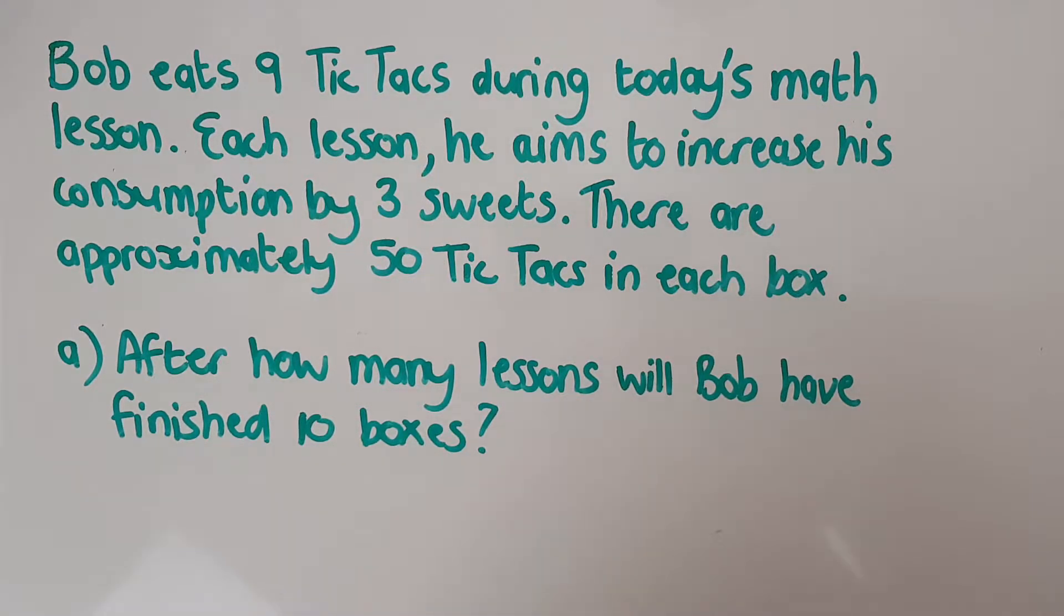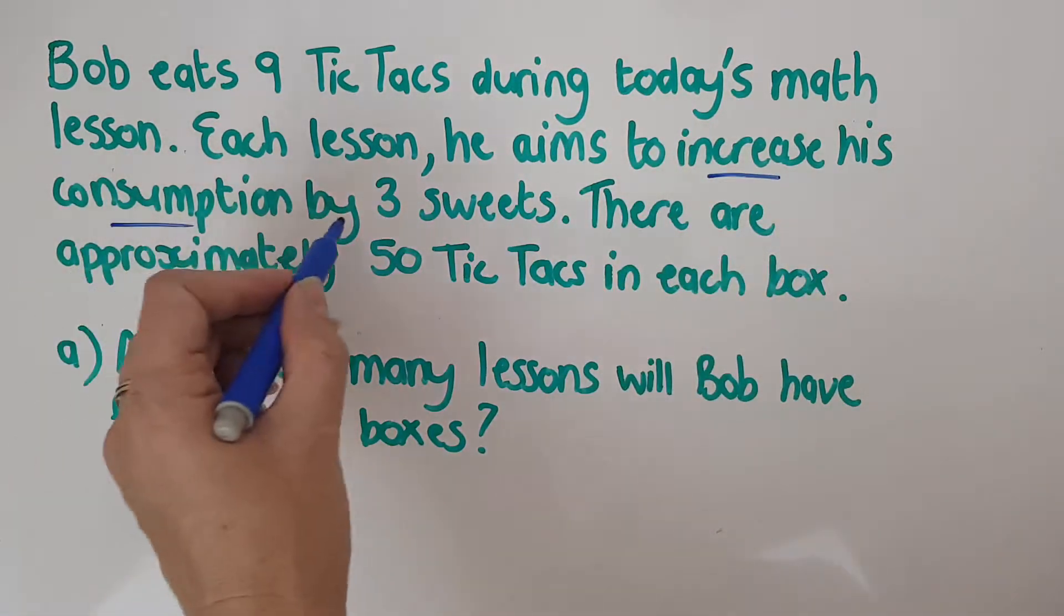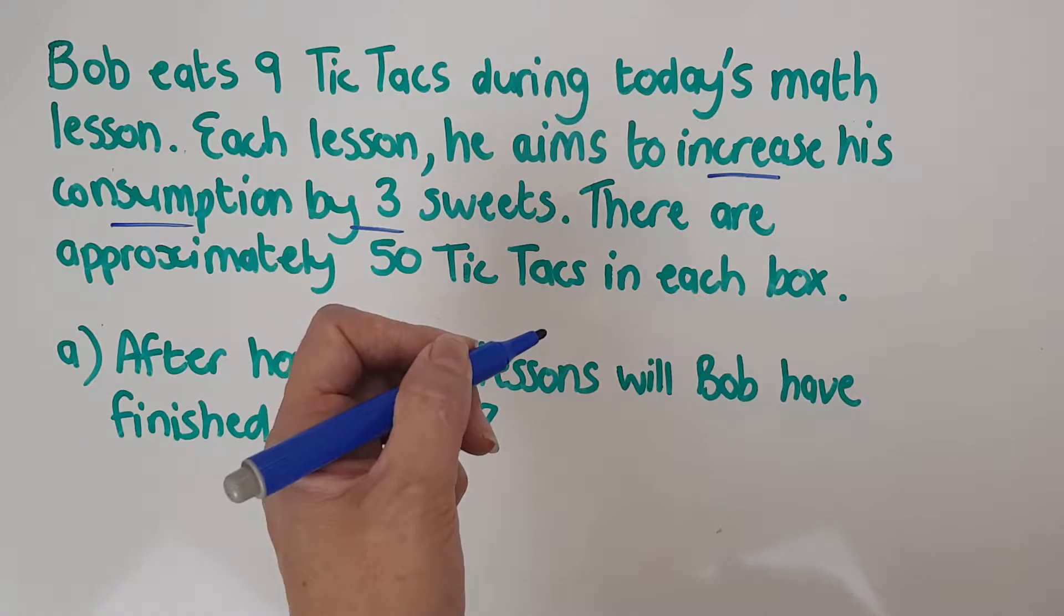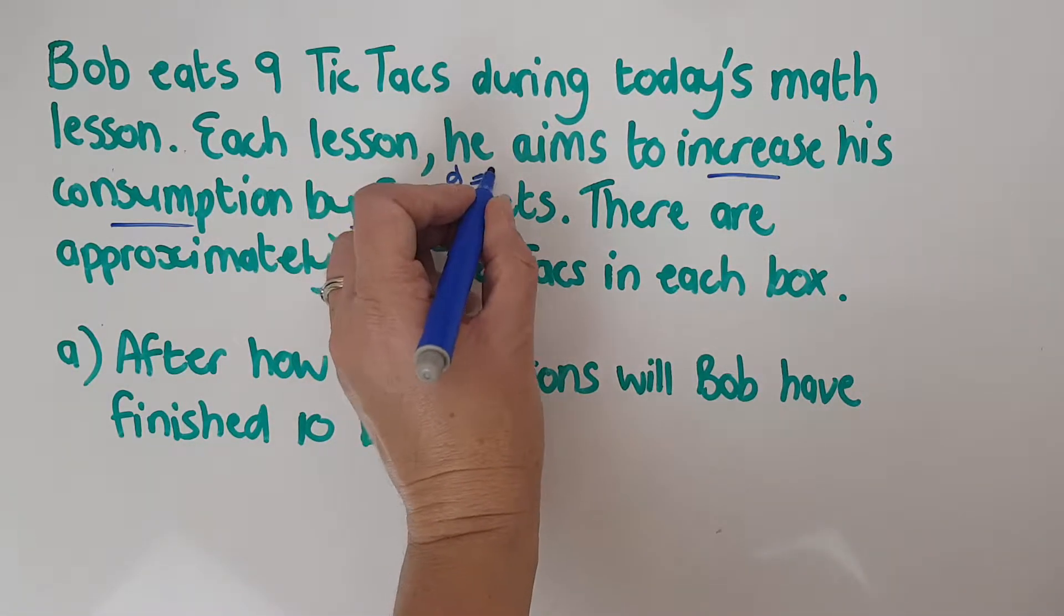Bob eats nine tic tacs during today's math lesson. Each lesson he aims to increase his consumption by three sweets. Are you seeing an arithmetic problem there? He's going to add three each time. So we have the d equals three.